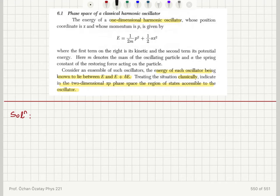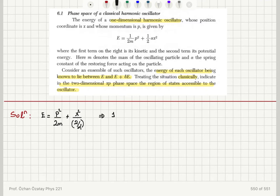We can write the energy of the oscillator classically as p squared over 2m plus x squared over 2 over alpha. Dividing both sides by energy, we obtain 1 equals p squared over 2mE plus x squared over 2E divided by alpha. The reason for doing this will become clear.